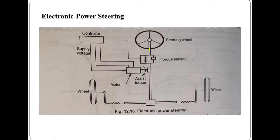Generally in previous types of steering systems we discussed how the steering wheel's rotational reaction is converted into the angular movement of the wheels by use of different mechanisms and linkages. In the case of a conventional steering system and in the case of power steering, use of hydraulic fluid is there. So in today's lecture we will discuss the electronic power steering system.